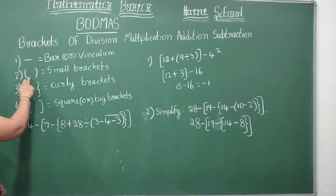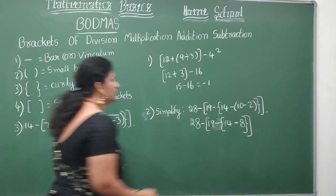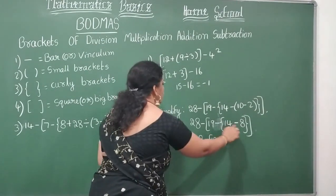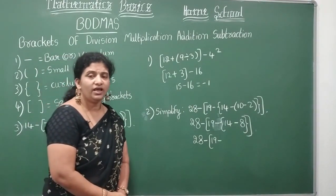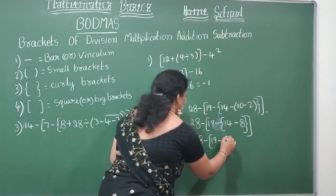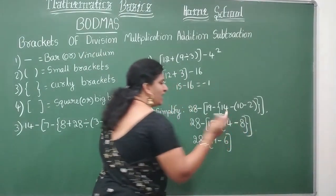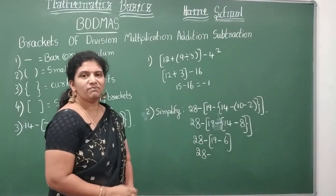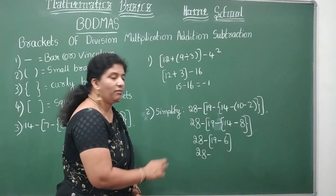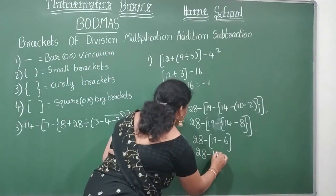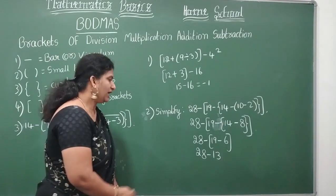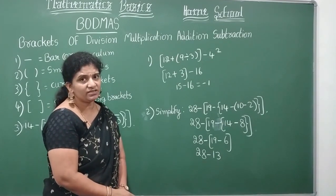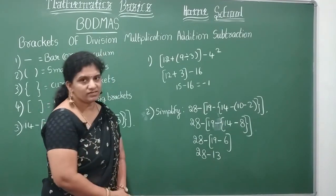Next I go for the curly brackets. 28 minus 19 minus. So 14 minus 8, how much? In 14 you remove 8, it will be 6. Now this bracket also vanished. Now 28 minus, now simplify the square bracket. 19 minus 6 will be 13.